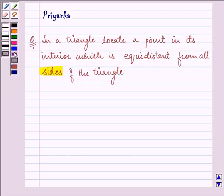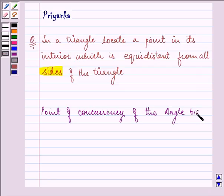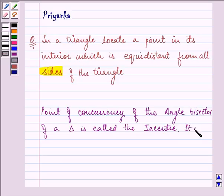Before proceeding, we should know that the point of concurrency of the angle bisectors of the triangle is called the incenter. It will be equidistant from all sides. This is our key idea.